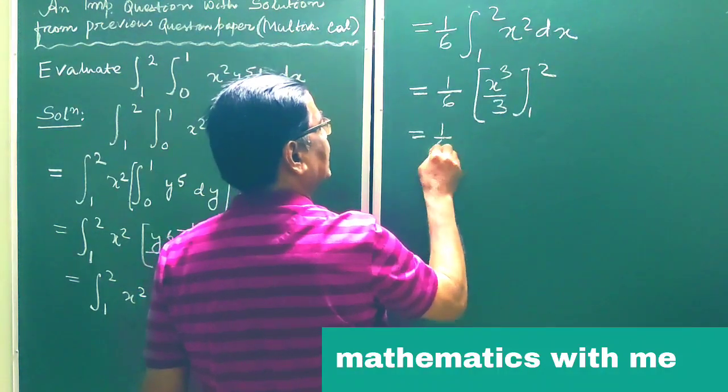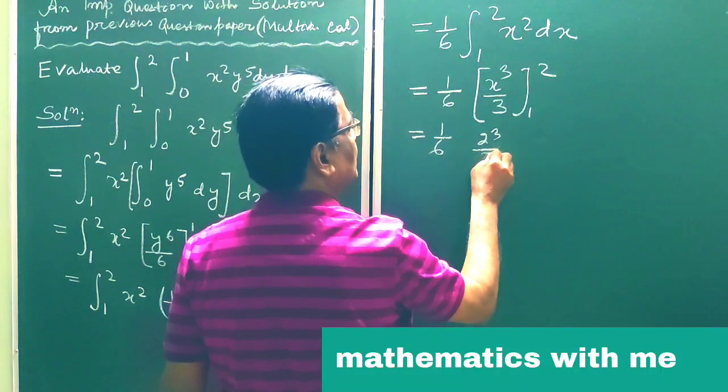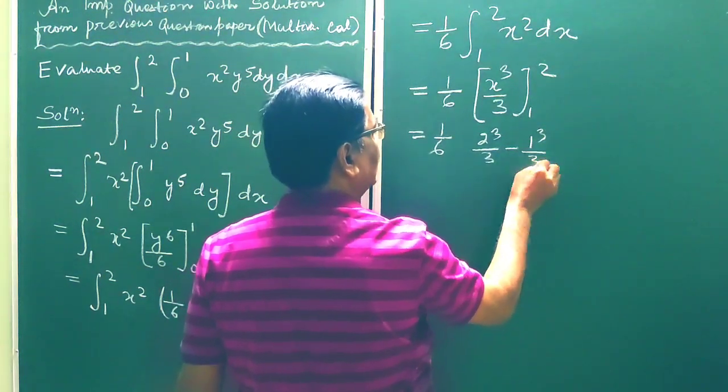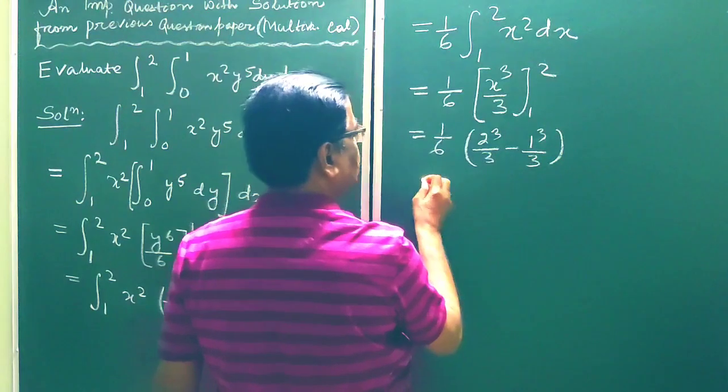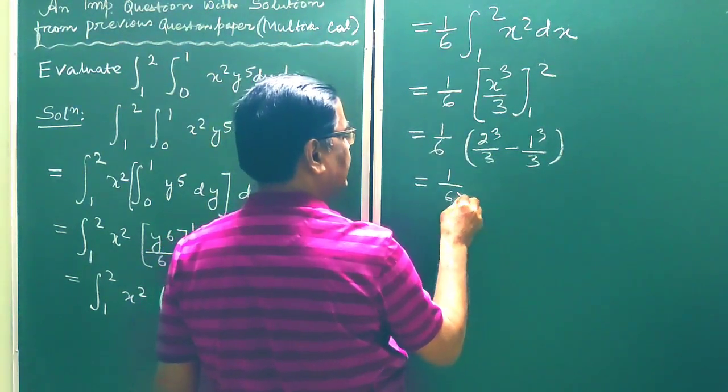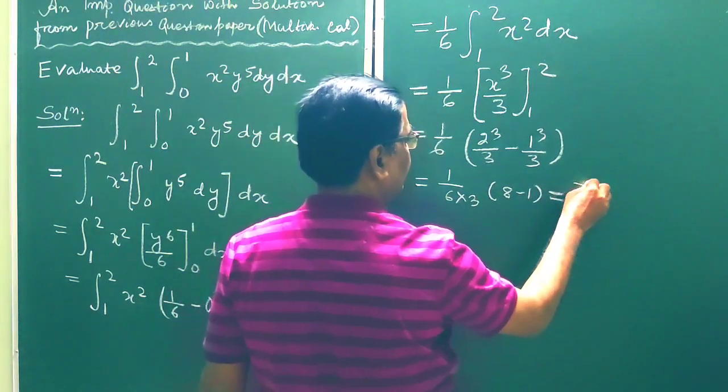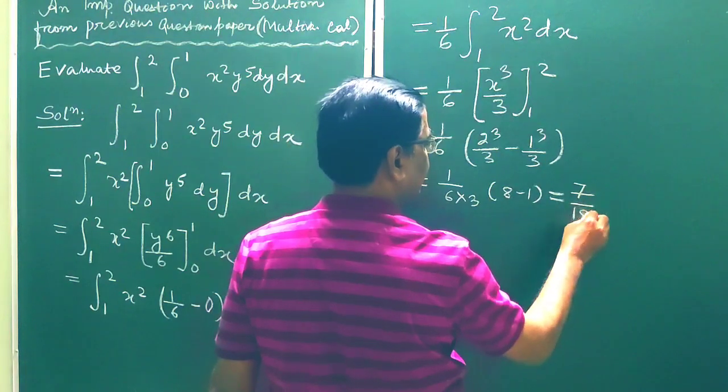This is 1 by 6, 2 cube by 3 minus 1 cube by 3. So this is equal to 1 by 6 into 3, this is 2 cube 8 minus 1, this is 7 by 18.